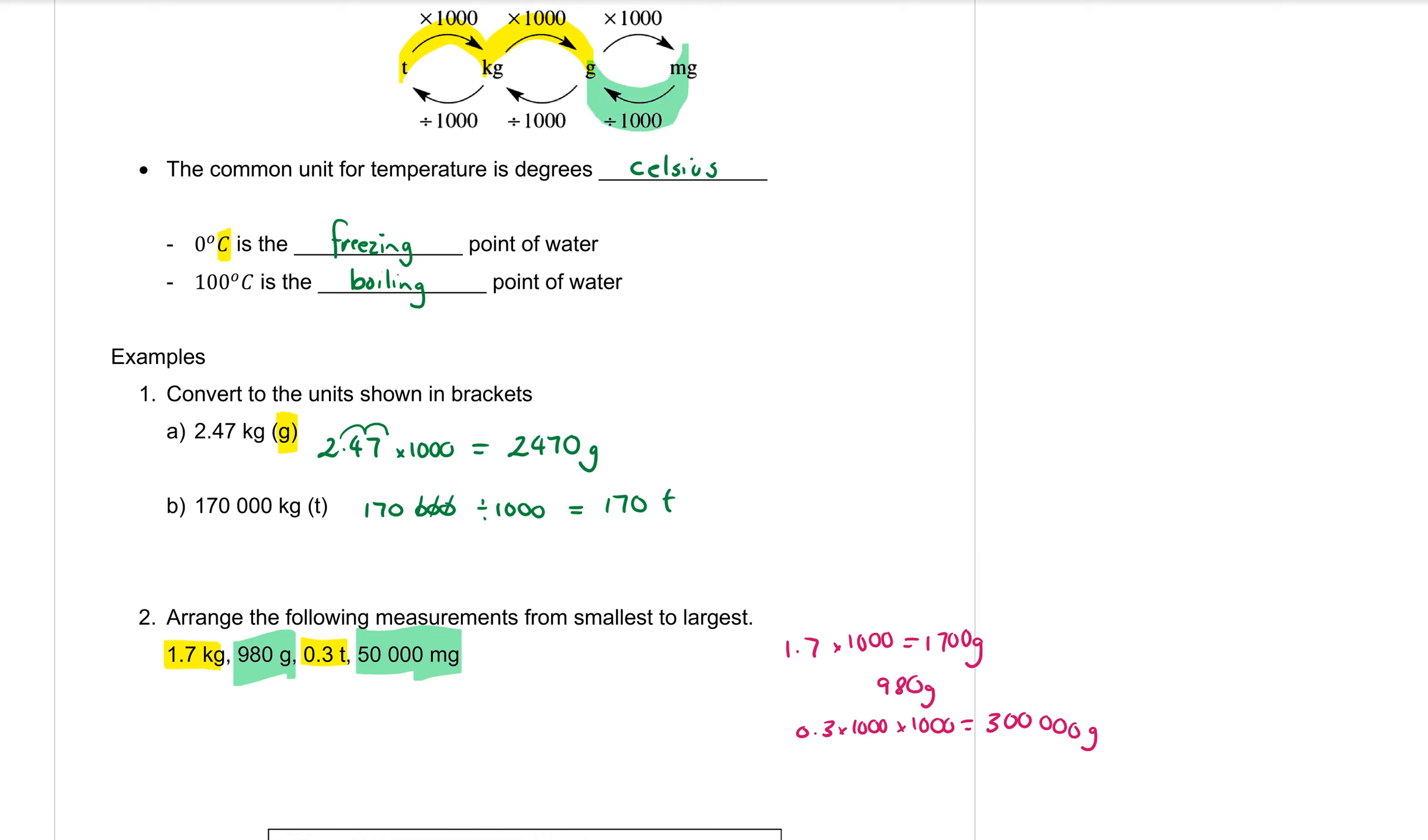And the last one, 50,000 milligrams. At milligrams we want to go to grams so we want to divide that by 1,000. So 50,000 divide by 1,000. That's going to take off those three zeros which is 50 grams.